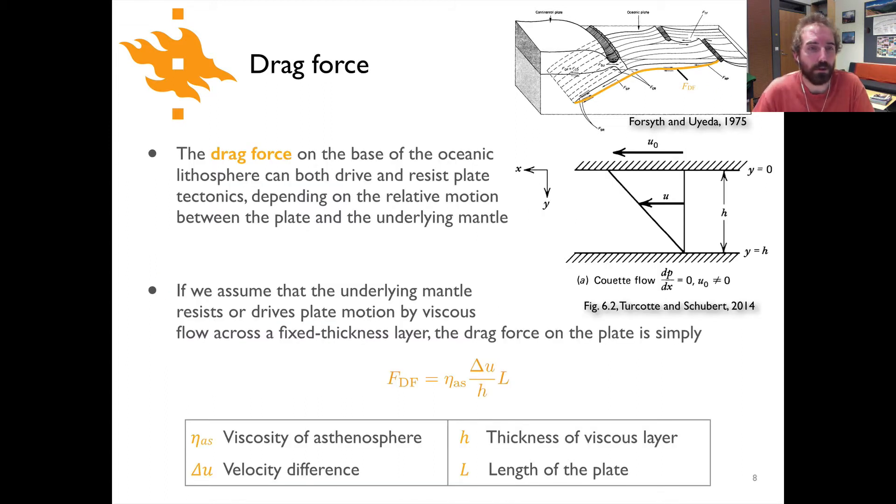The last force we can talk about then is the drag force, which is the force that's going to be acting along the base of the lithosphere along its length. And this is a force that can, as mentioned in the first lecture, either drive or resist tectonic motion depending on the relative motions of the lithospheric plates compared to the underlying mantle. But essentially it's a force where the mantle is flowing beneath the lithosphere and the viscous coupling between the two can either drive or resist motion. And so there's a viscous flow that will take place across a given thickness of the mantle as we've seen previously.